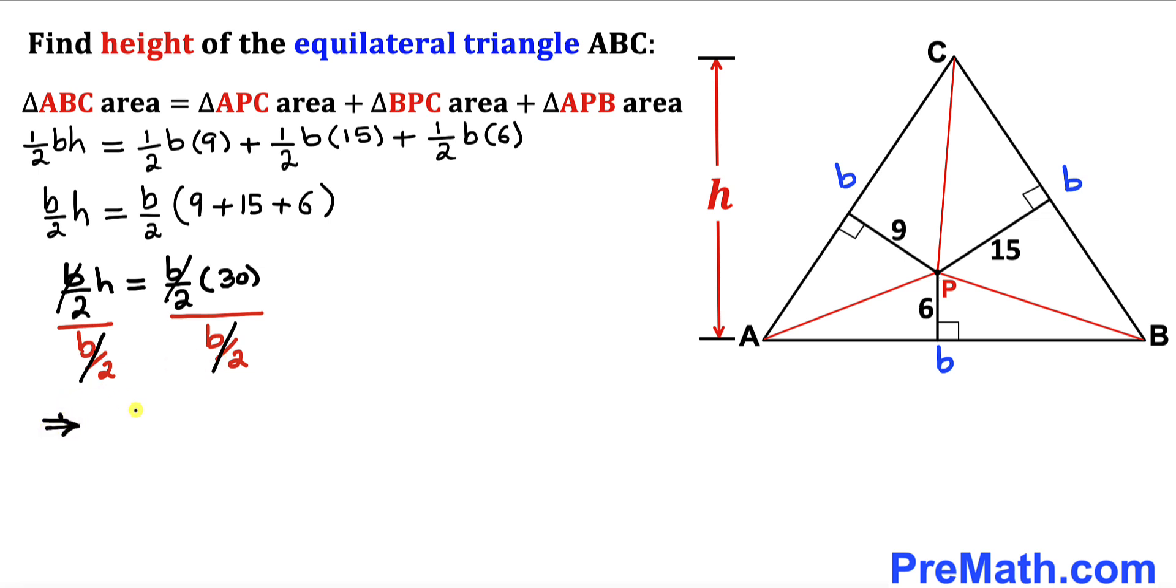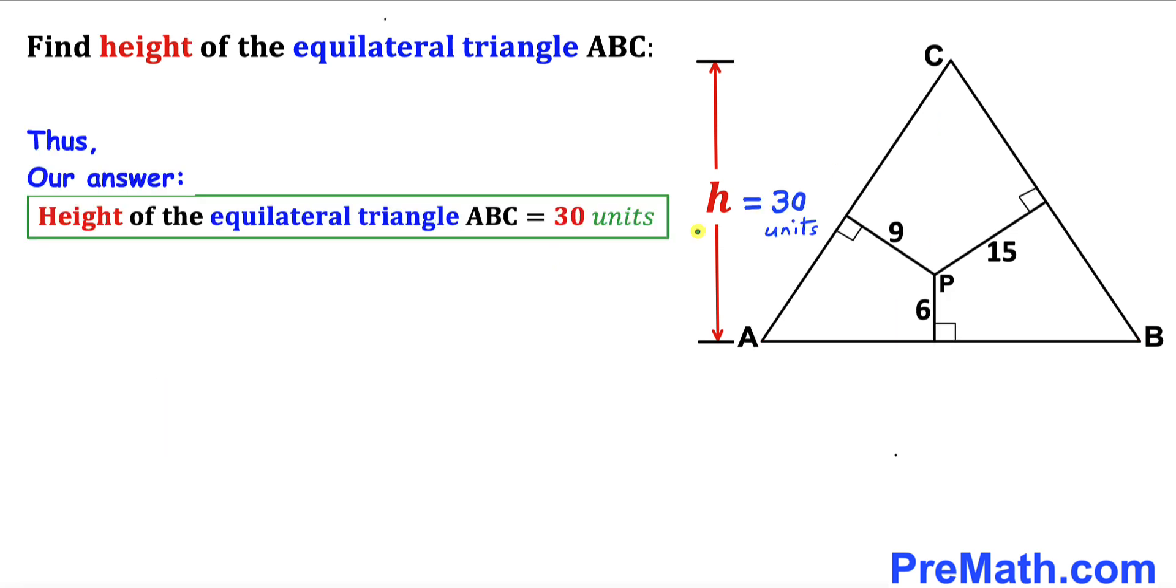So therefore on the left hand side we are ended up with h equals to 30 units, and that's our height. So the height of this equilateral triangle ABC turns out to be 30 units. And if we look closely we can see that this height is equal to the sum of these three individual heights: 9, 15, and 6. And that's our final answer. Thanks for watching and please don't forget to subscribe to my channel for more exciting videos.